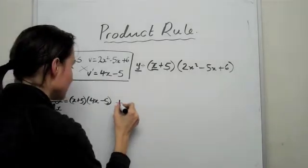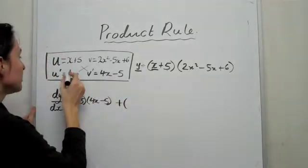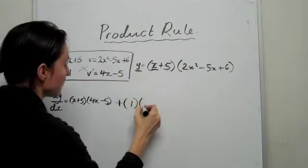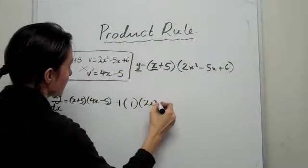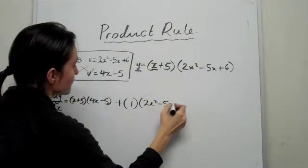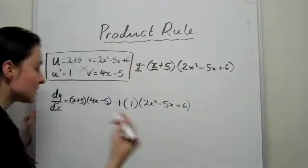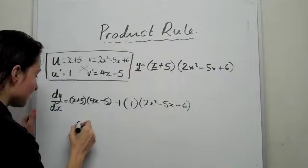So plus U dash, which is 1, times by V, which is this. Now it's not hard to get this expression. What is quite tricky about this section is just to simplify it all. That's the hard part.